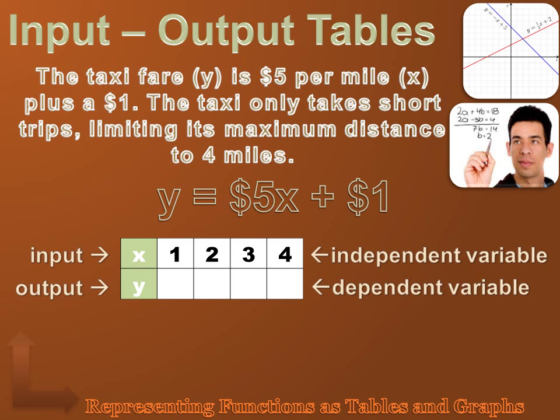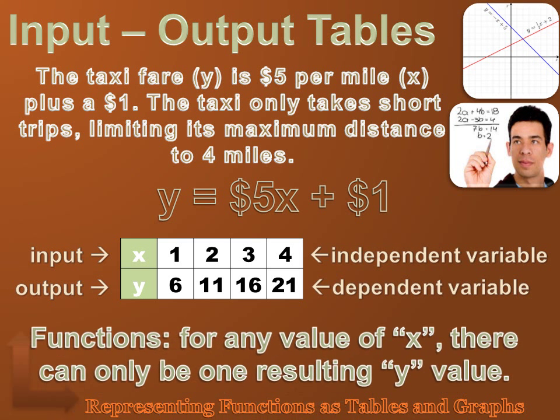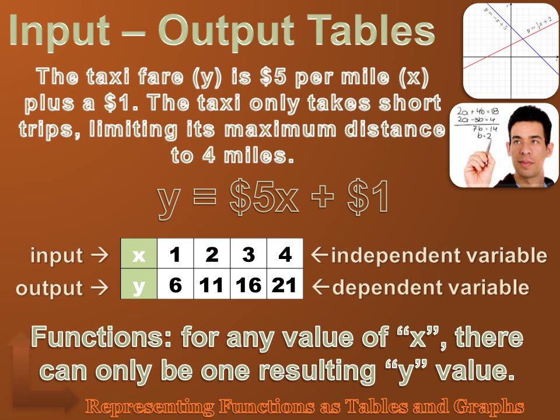Now, I can calculate the y values that result from every single x value that I've used in the table. I could start with 1 and I just input 1 in place of x and it would read y equals 5 times 1 plus 1, or 6. I do the same for 2: 5 times 2 plus 1 is 11. And I do the same for 3 and 4. Now, there's another important thing you need to notice here. For every x value, there is only one y value. For any value of x, there can only be one resulting y value. Functions will only have one y value for each x value.